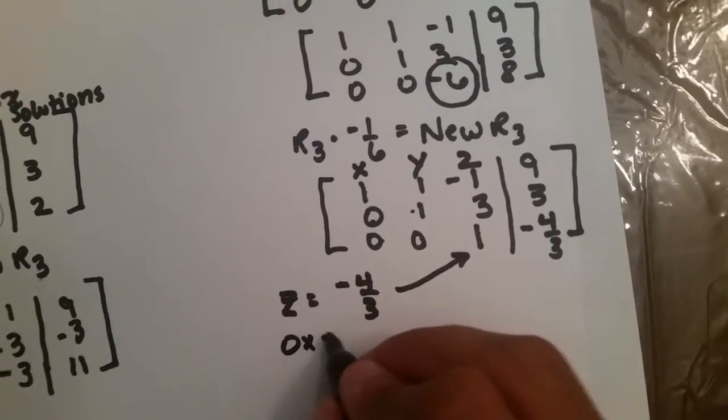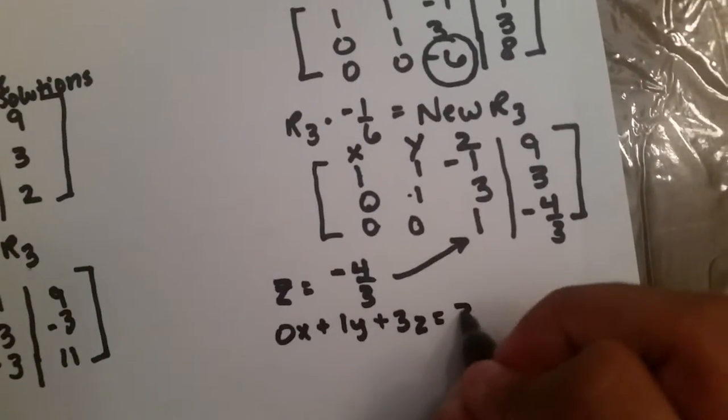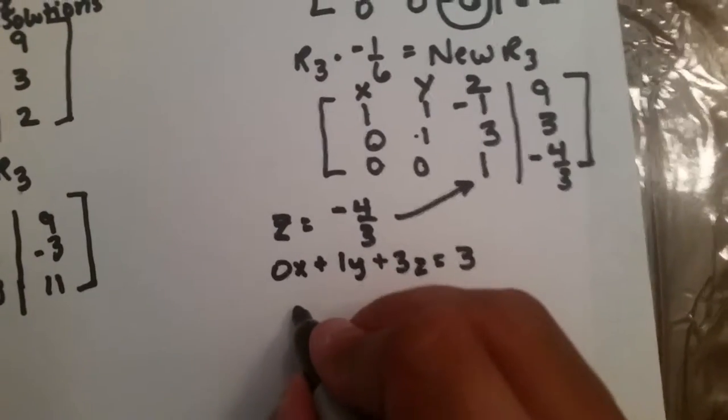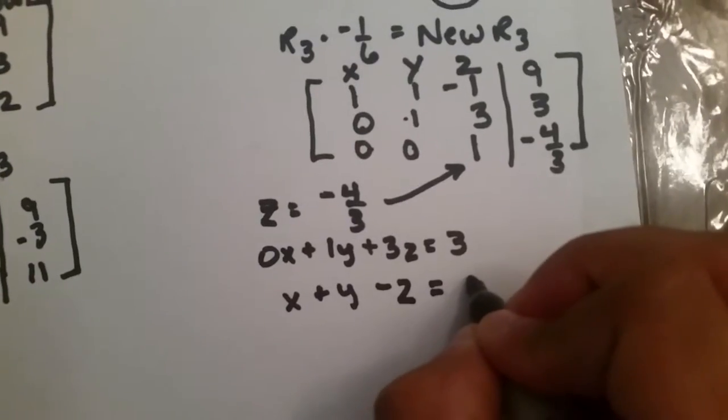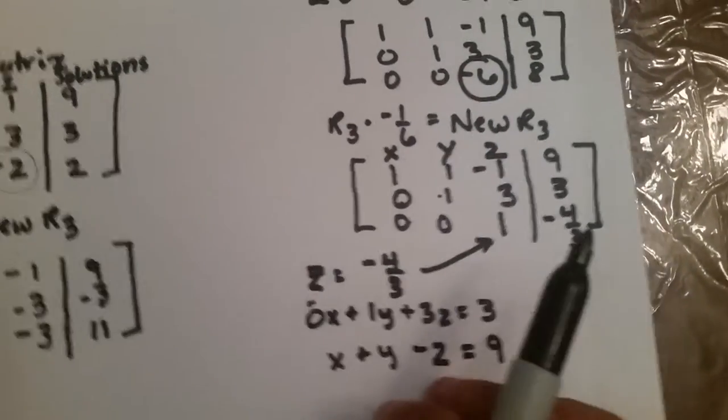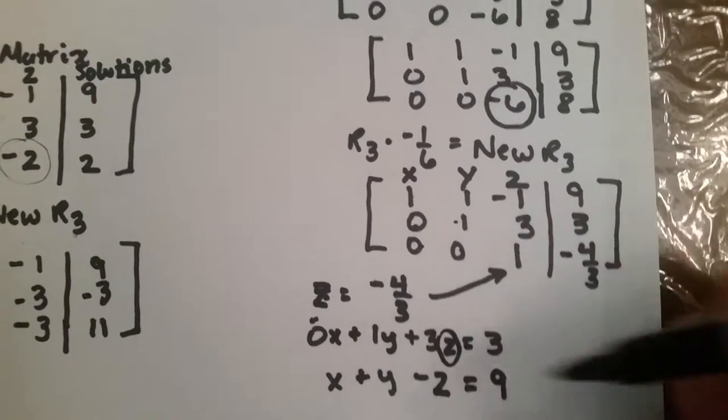And 0x plus 1y plus 3z equal to 3, which is your second equation. And finally, we have x plus y minus z equal to 9. So, now we know what z is, we literally plug z in for our second equation.